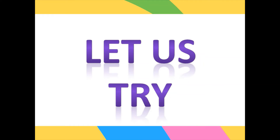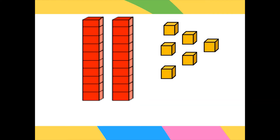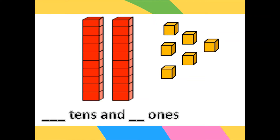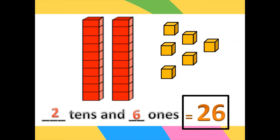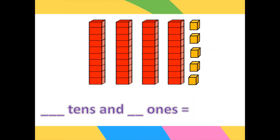Let us try these examples. For the first set, how many tens are there? Very good — there are two tens. How about ones? Very good, children — there are six ones. Therefore we have 26 blocks. For the next set, how many tens are there? There are four tens.